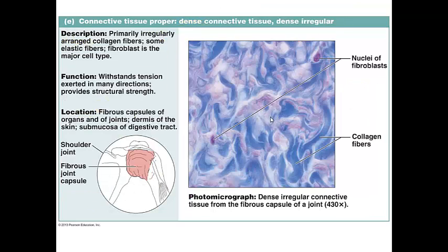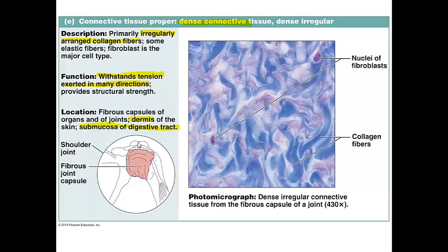The next type of dense connective tissue is called dense irregular connective tissue. The difference here is that the collagen fibers are irregularly arranged — going in different directions — to withstand tension exerted in many different directions. A great example of this is in the dermis. The submucosa of the digestive tract is another example where we find dense irregular connective tissue.